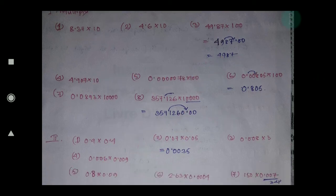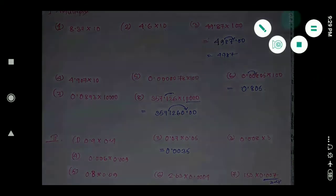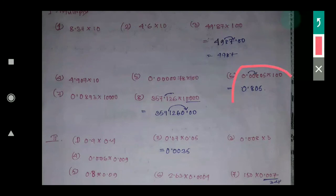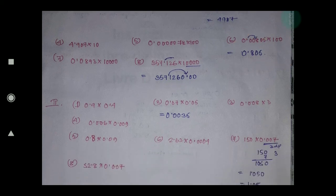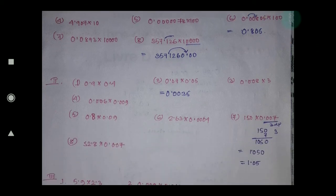So now 4.5 — this one you have to do. Check once. How many zeros are there? 2 zeros. That means it will shift 2 places to the right side. So it will be 0.805. Similarly this one also — you check it once, do by yourself, then after you check.